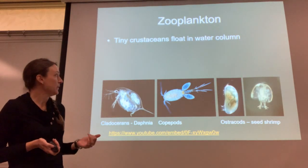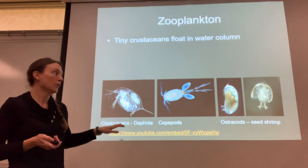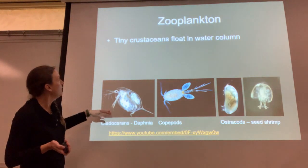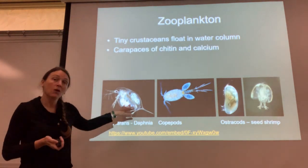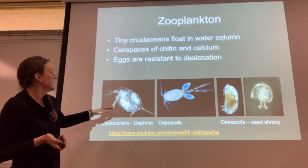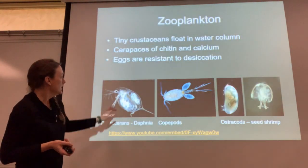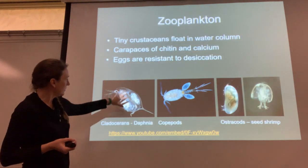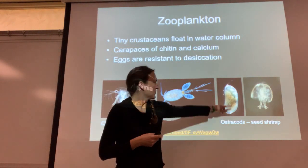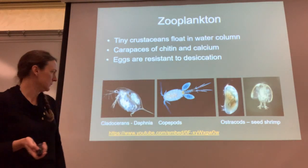The last crustaceans are zooplankton — tiny little crustaceans that tend to float in the water column, more commonly found in lakes and the ocean but sometimes in rivers as well. Their carapaces are made of chitin but also of calcium, which is true for all crustaceans. They often have eggs resistant to desiccation. Some really cool different kinds: we have cladocerans, copepods, and ostracods, which look like little clear jelly beans that open up and have little legs.